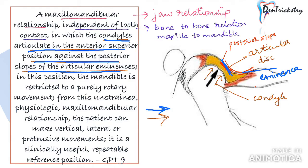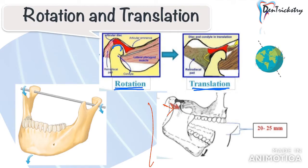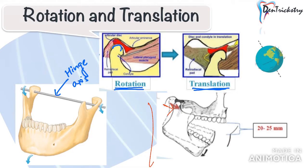While in centric relation, the mandible is restricted to a purely rotary movement. All mandibular movements are divided into either rotation or translation. Rotation happens when the head of the condyle rotates around an imaginary horizontal or transverse axis — it is a simple hinge movement within the socket. This transverse axis is known as the hinge axis, an imaginary line which passes from the center of one condyle to the other. Rotation is restricted to only the first 20 millimeters of mouth opening.